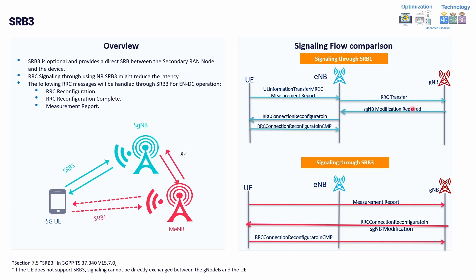As an example for the signaling comparison: with SRB1, the UE sends a measurement report to the eNB, the eNB forwards it to the gNB via RRC transfer, the gNB requests an SRB1 modification from the eNB, the eNB sends an RRC confirm to the UE, and the UE replies. Once SRB3 is enabled, the UE communicates directly with the gNB, saving multiple signaling steps and reducing RRC signaling latency.